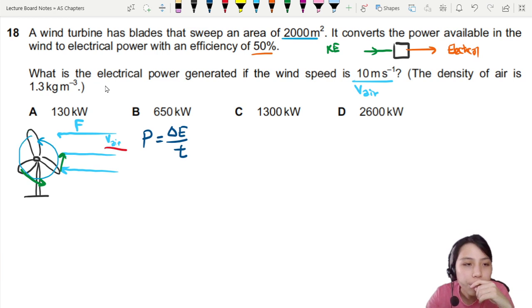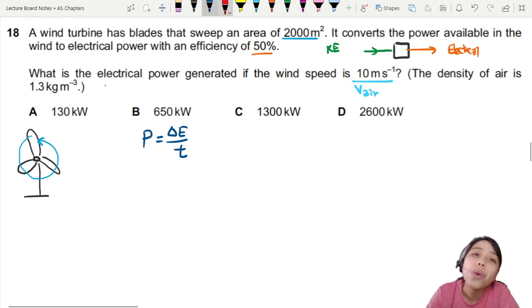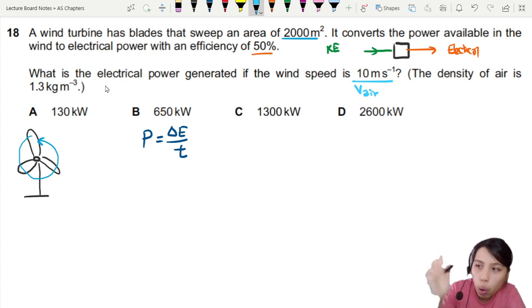So let's look at the change in energy. What energy does the air have? Kinetic energy is moving, right? Blowing in. So we can say that this will be the change in kinetic energy, half mV squared over T.